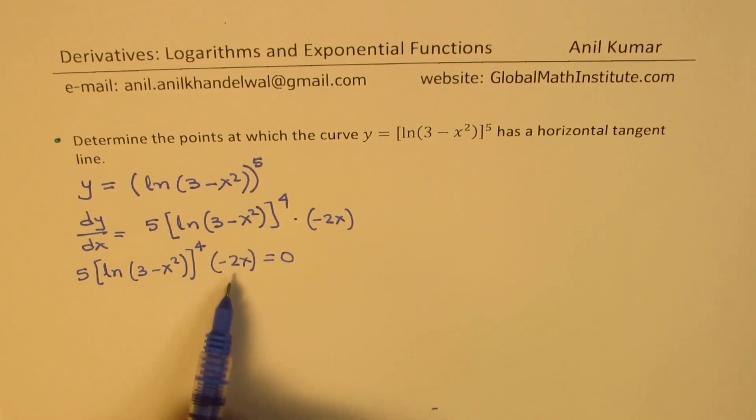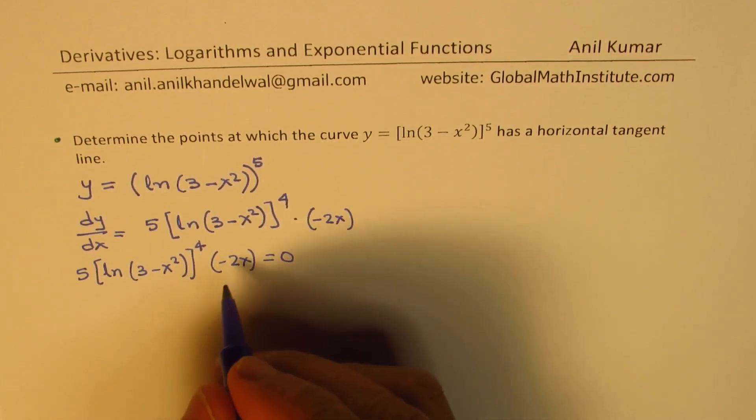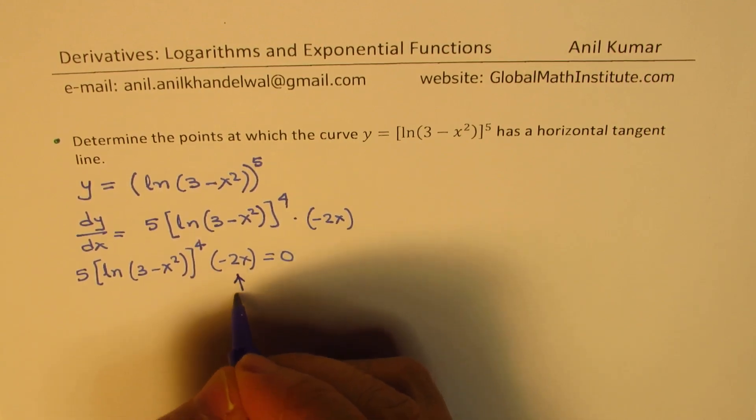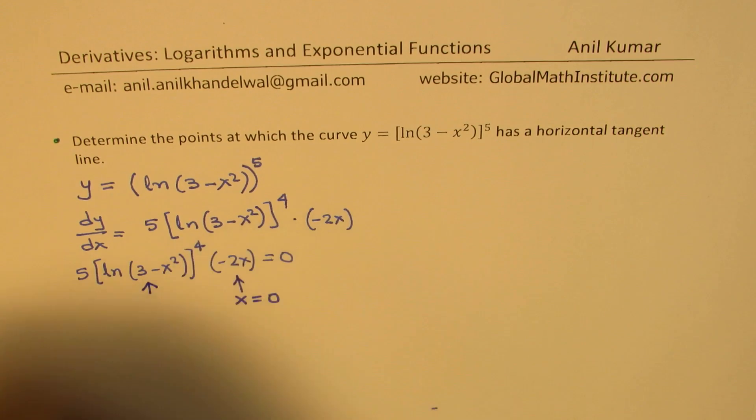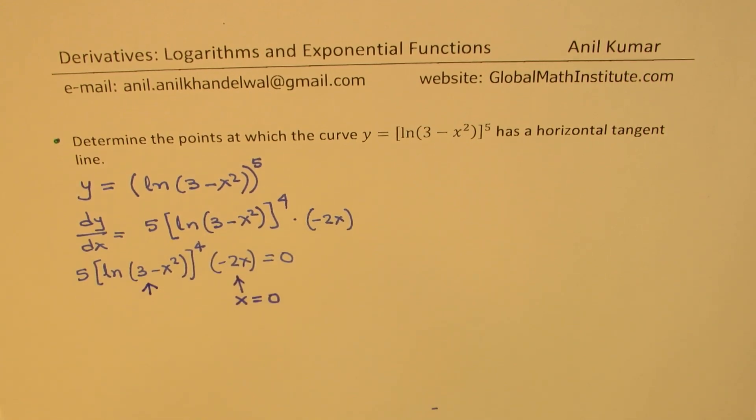Clearly, we get one value from x equals zero. And the other value we could get from here. Now, we know ln of 1 is zero.